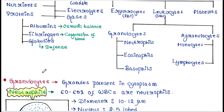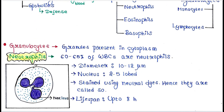Granulocytes: these cells contain granules in their cytoplasm. Neutrophils: 60 to 65 percent of WBCs are neutrophils. Diameter 10 to 12 micrometers. Nucleus is 2 to 5 lobed. They are stained using neutral dyes, hence they are called neutrophils.